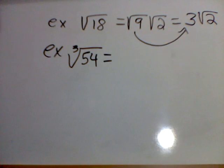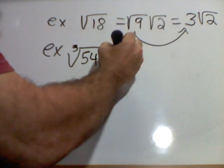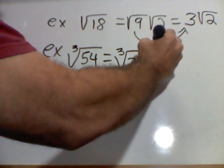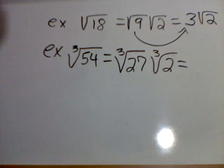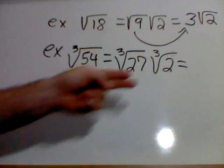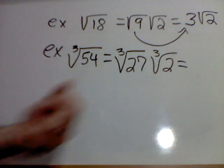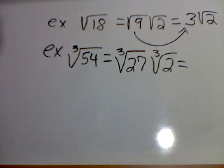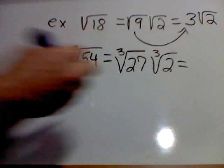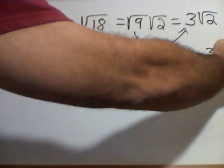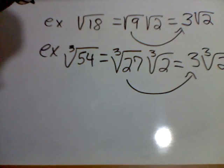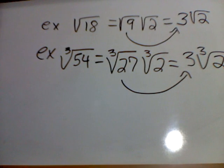Cube root of 54. Now I need a factor of 54 that is a perfect cube. I'll write that as cube root of 27 times cube root of 2 under the radical still. But I know the cube root of 27 is 3, so that final answer is 3 cube root of 2.